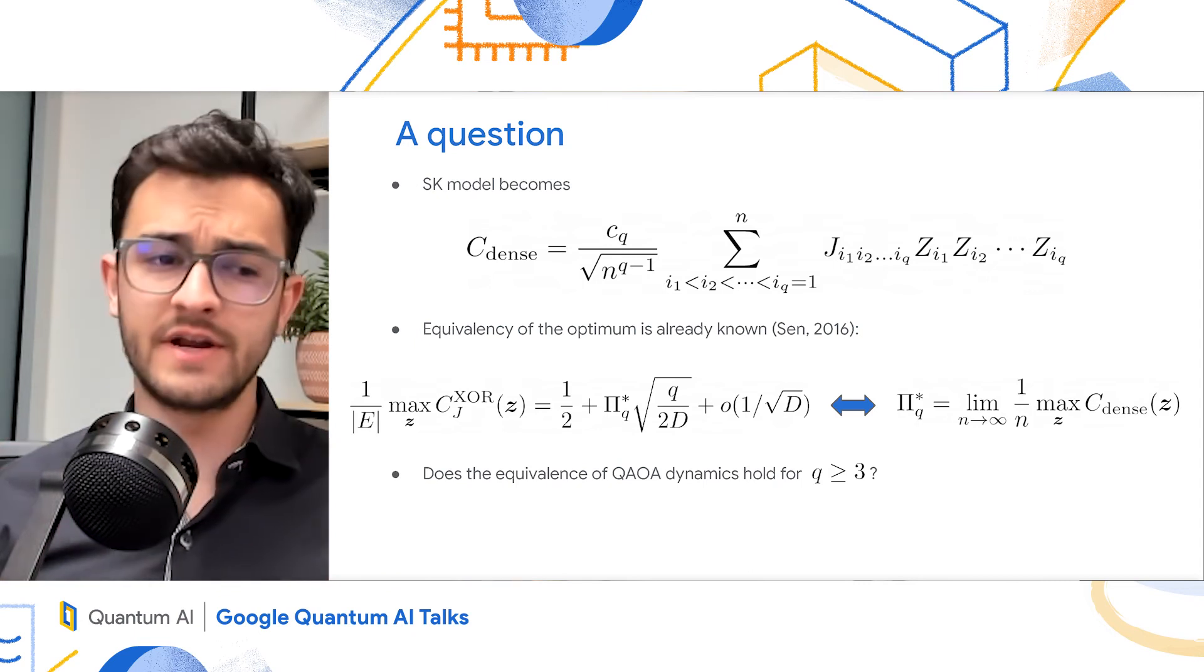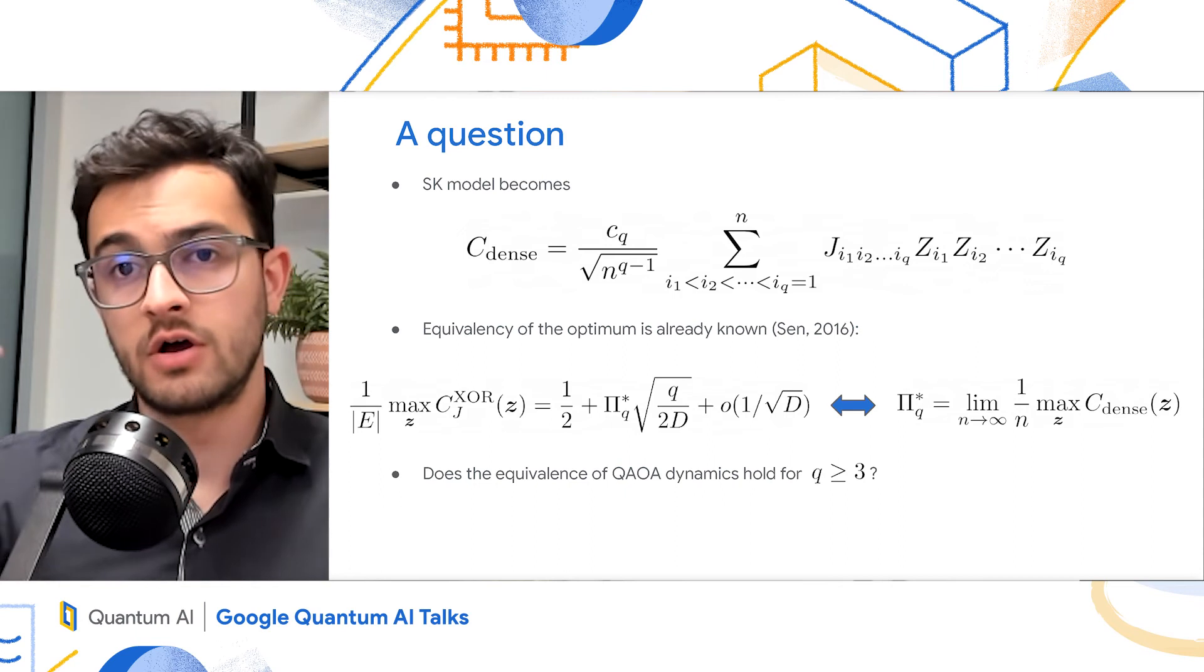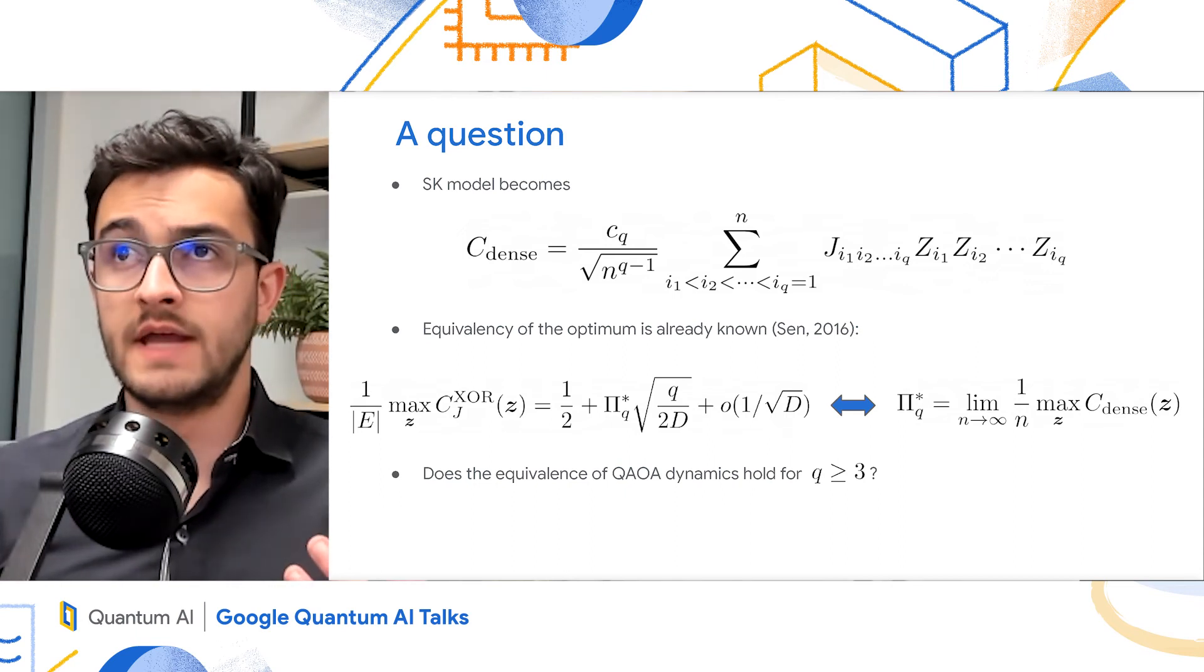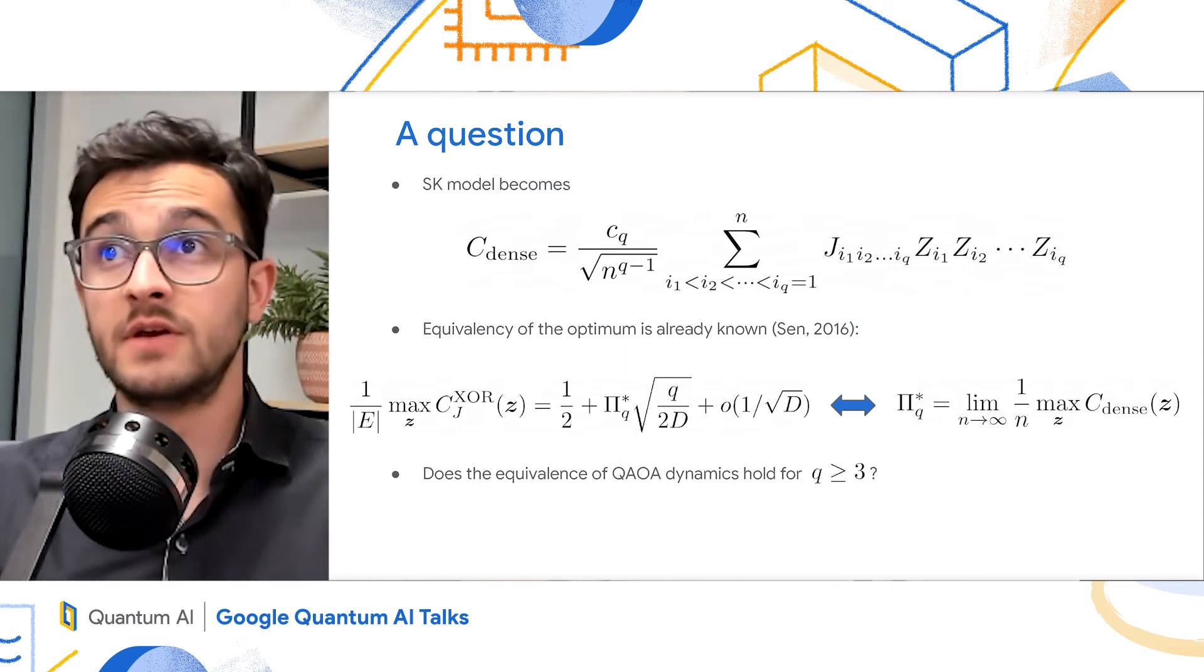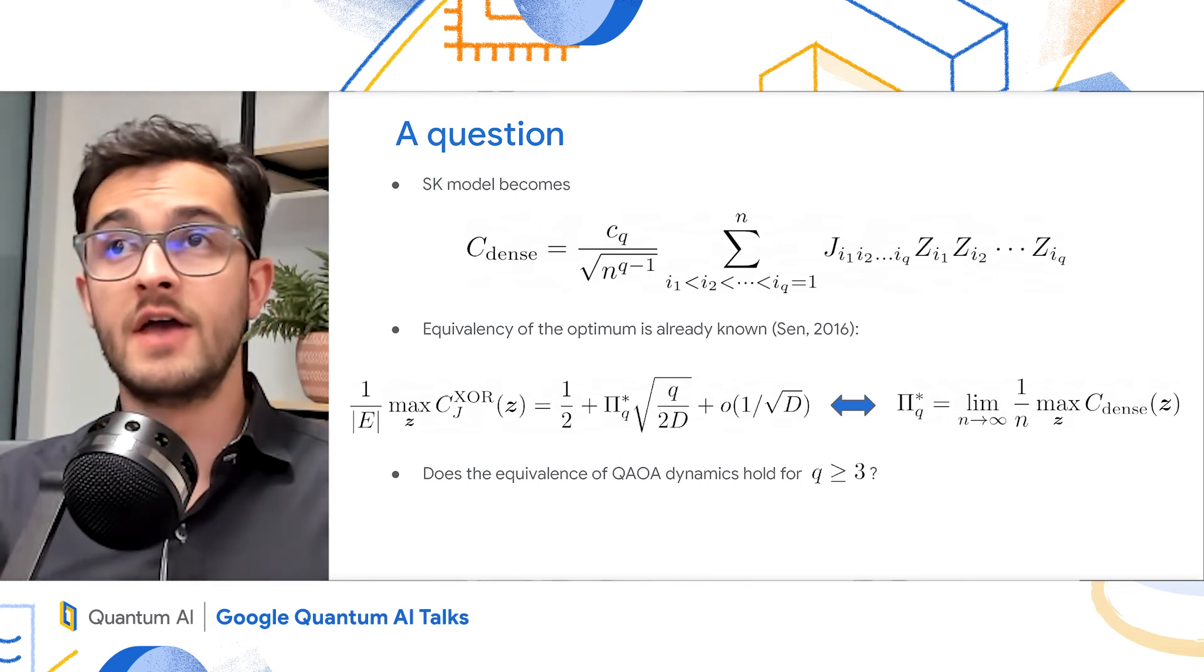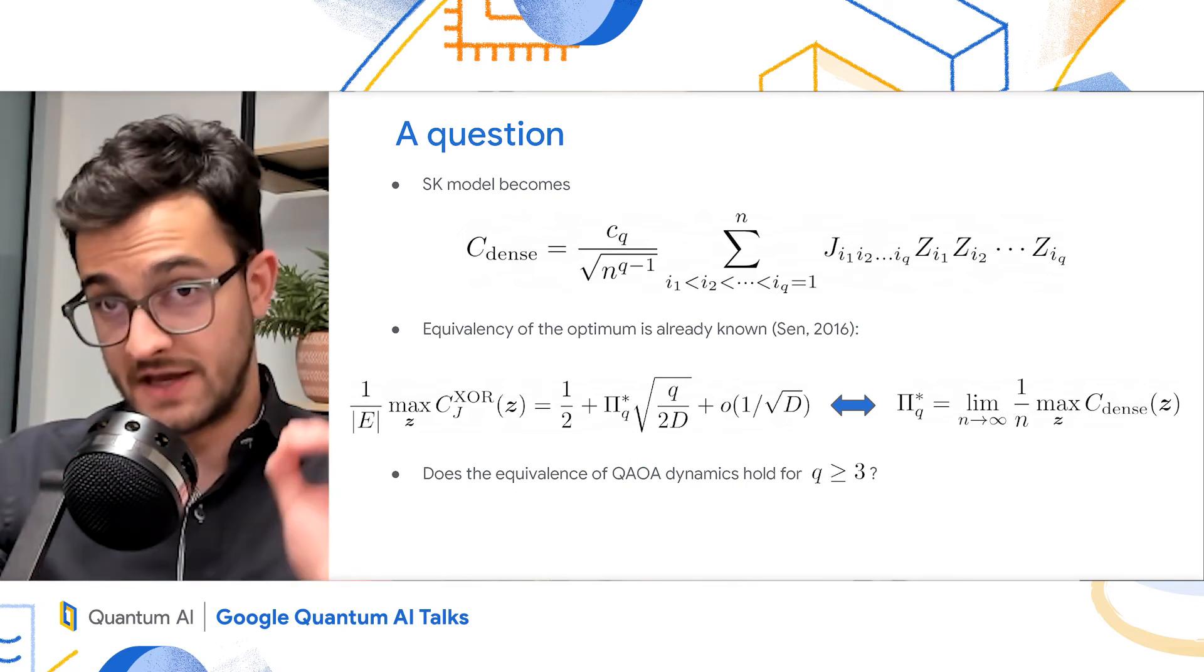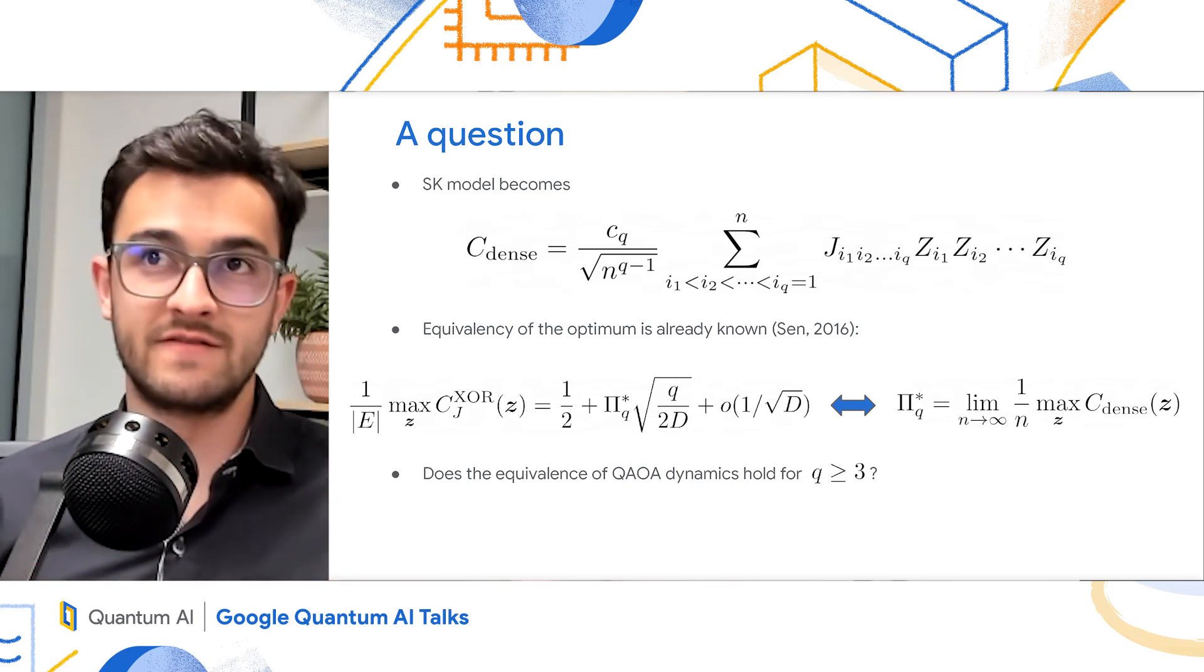So here's a very interesting question. You can also generalize the SK model. And instead of having the product of 2 z's, you have the product of q z's. So this is a generalized q-spin model. Now, it's already known that there's a connection between the optimum of the q-spin model and Max-Q-XOR, which is given as follows.